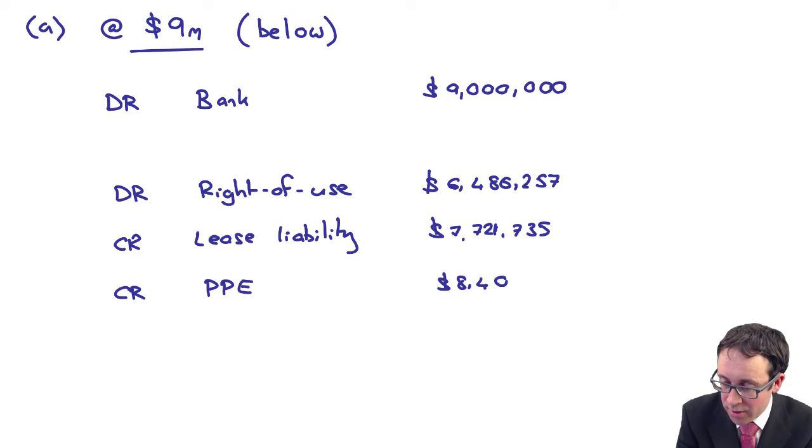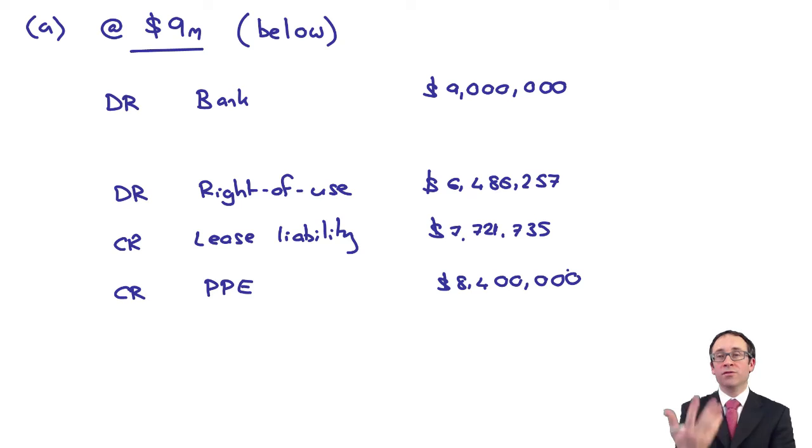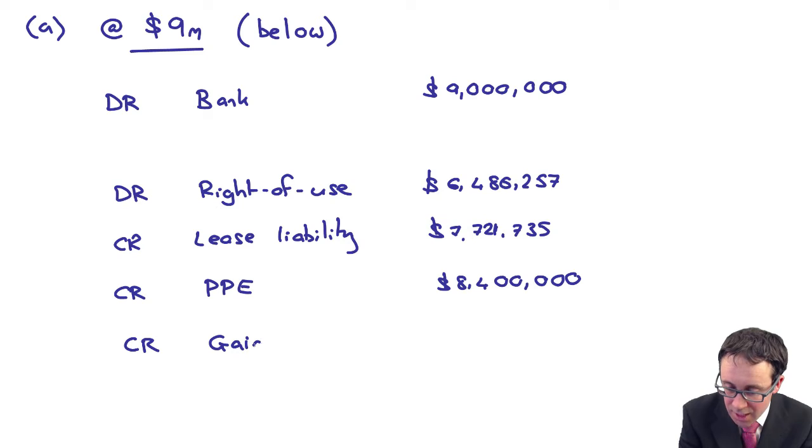You would still credit the PPE at the 8.4 million. You're still keeping the right-of-use asset in there based upon the carrying value and the fair value that you should have got. We then credit the statement of profit or loss with our gain of 364,522.